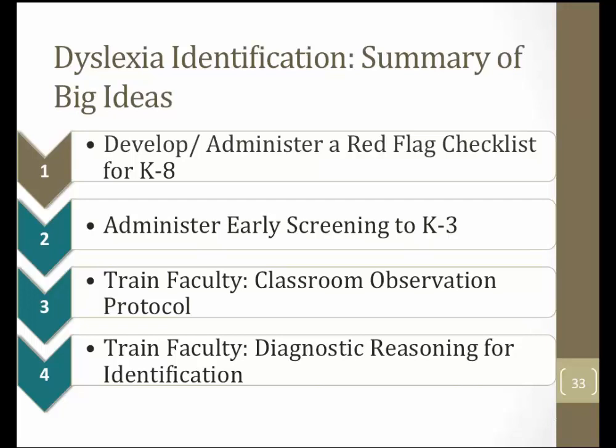Big ideas related to dyslexia identification — a summary for districts. First, develop and administer a red flag checklist for students in K-8. Second, administer early screening assessments, at the very least, to students in K-3. Third, train faculty in the use of a classroom observation protocol. And finally, train faculty in diagnostic reasoning for the identification of students with dyslexia.